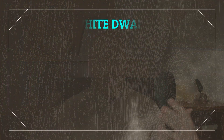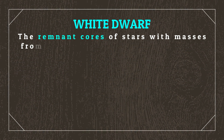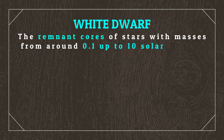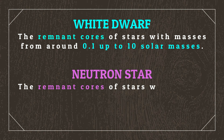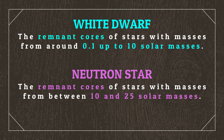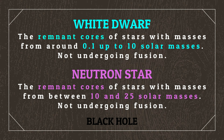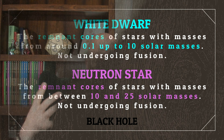At the end of a star's life, it will either become a white dwarf, a neutron star, or a black hole if it's sufficiently massive. White dwarves are the remnant cores of stars with masses from around 0.1 up to 10 solar masses, while neutron stars are the remnant cores of those stars that were between 10 and 25 solar masses. Anything above that is likely to form a black hole, which we've covered in greater detail in our episode on galaxy building. Both white dwarves and neutron stars are not undergoing fusion, with the light and heat they emit coming from residual thermal energy.